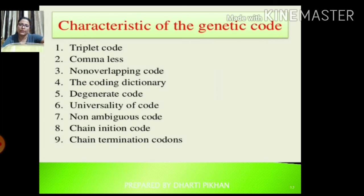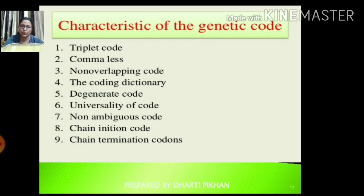The characteristics of the genetic code: First, genetic code is always in triplet form — all entries in the table are triplets, such as UUU, AUG, UGA. Second, it is comma-less — there is no punctuation mark used; it starts and ends without any separation. Third, it is a non-overlapping code — overlapping does not occur.